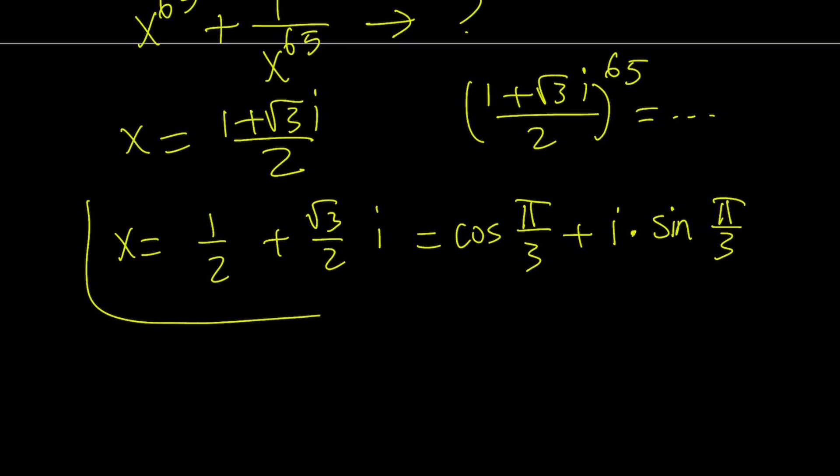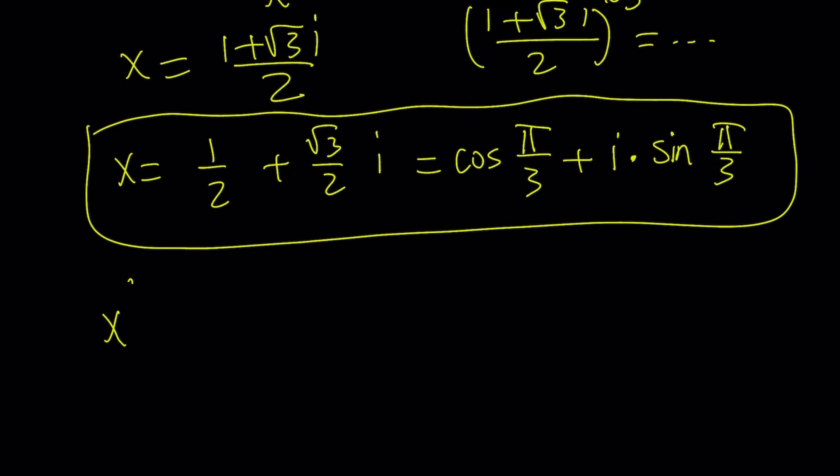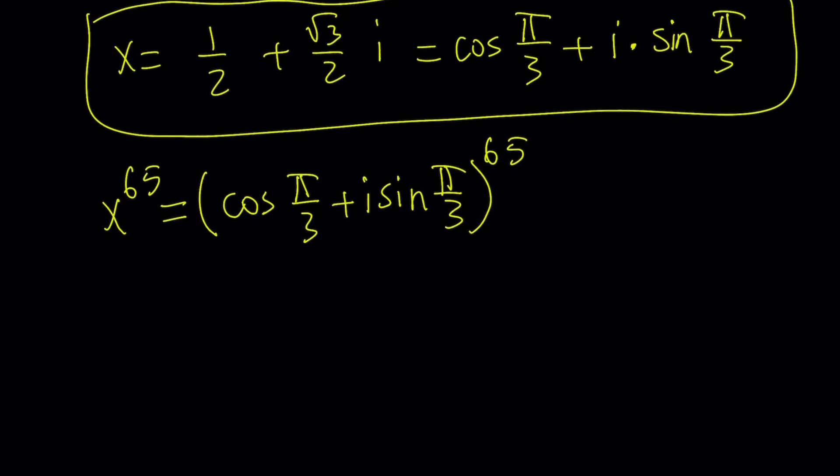Awesome. Now, I have the x in polar form. And I'm going to use the De Moivre formula. So I'm going to go ahead and raise x to the 65th power. How do you raise something in trigonometric form or polar form to a power? Easy. You just multiply the argument, the angle, multiply by that number. So it's just going to be cosine of 65 pi over 3 plus i sine 65 pi over 3. That's fairly easy, right? It's a really cool shortcut. Avoids definitely the binomial theorem of 66 terms.